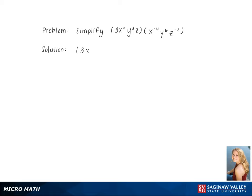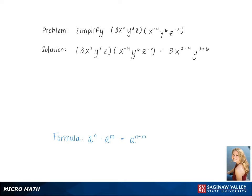To simplify 3x squared y cubed z, multiplied by x to the negative 4, y to the sixth, z to the negative 2, we first start by using the formula below and adding together the exponents of each separate variable, keeping the coefficient out front.